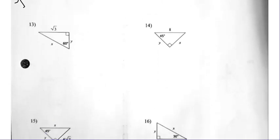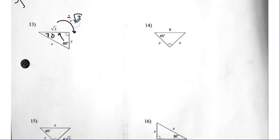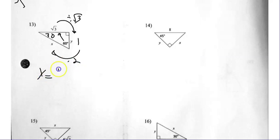Number thirteen — what do we have? We have the long side. So we need to go to the short side, which means we're going to divide by radical three. Radical three divided by itself is one. And then if we double that, that's two. So Y is one and X is two.